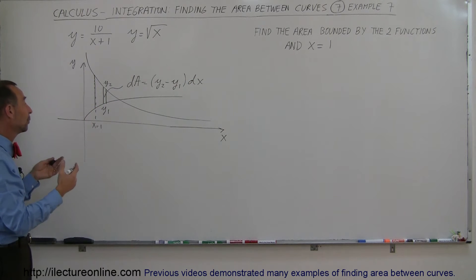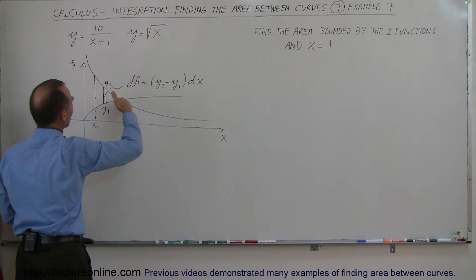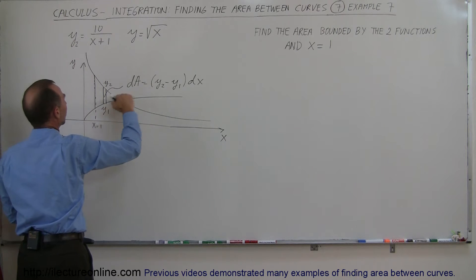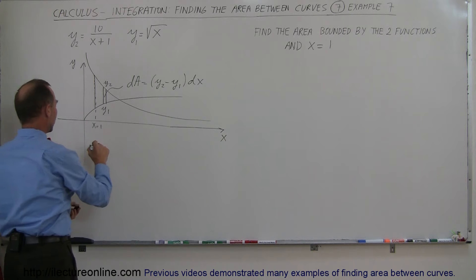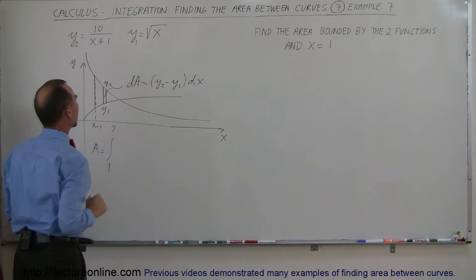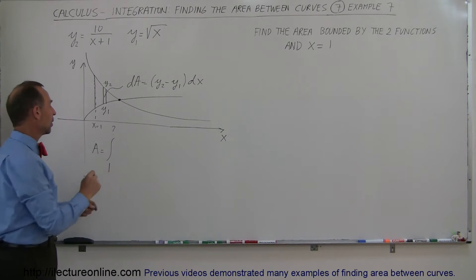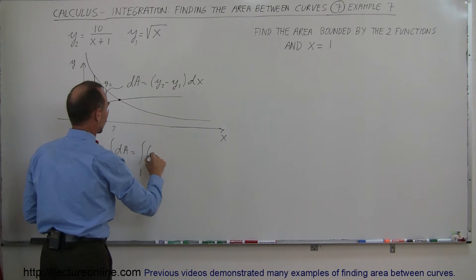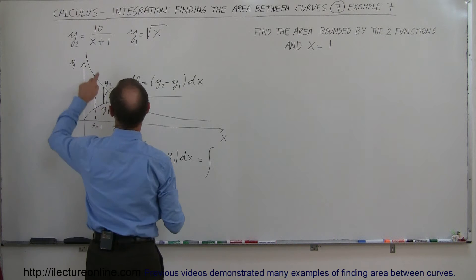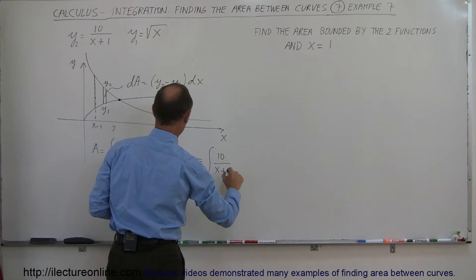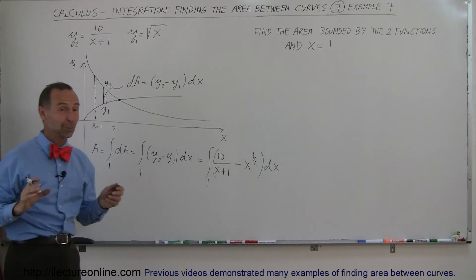The height is y2 minus y1, times dx. It doesn't matter which function we call y2 or y1 — the subscripts help us track which function we're dealing with. y2 belongs to the function 10 over x plus 1, and y1 is the square root of x. So the area is equal to the integral from 1 to some unknown upper limit of y2 minus y1 times dx, which is the integral from 1 to that unknown of 10 over (x+1) minus x to the one-half power, dx.